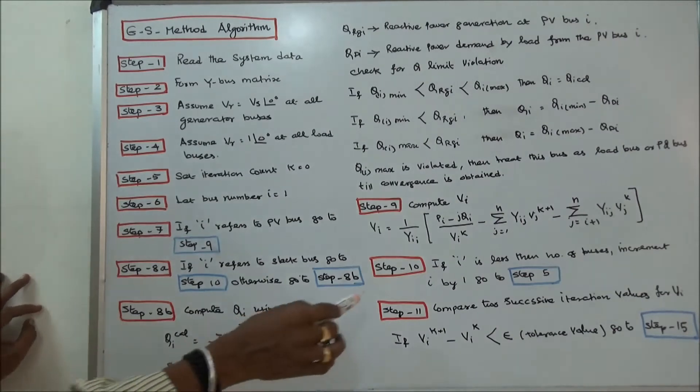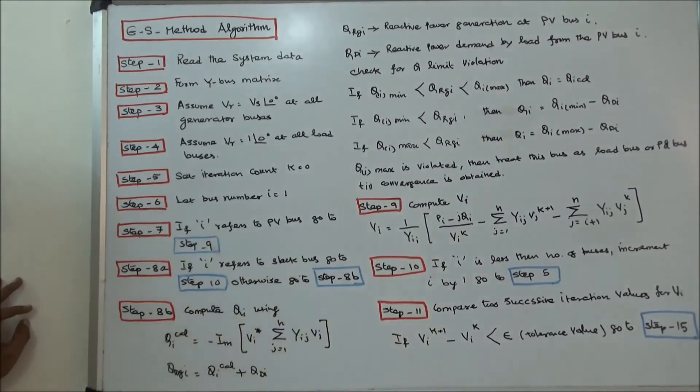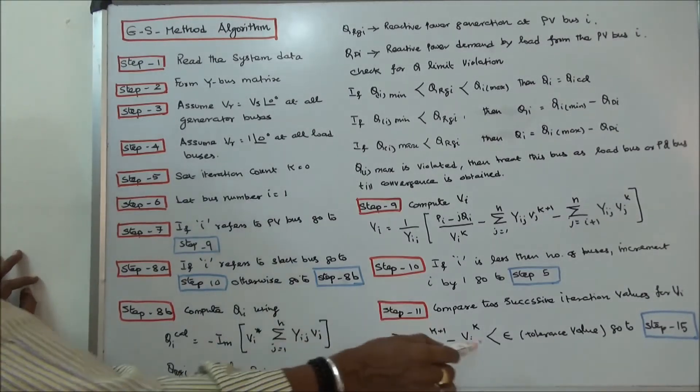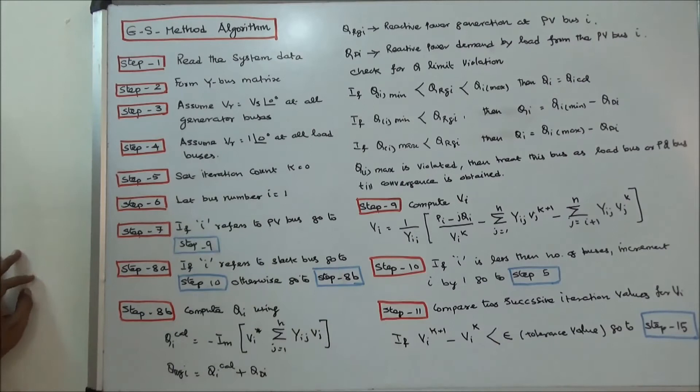Step 11: Compare the two successive iteration values of VI. If VI(K+1) minus VI(K) is less than excellent tolerance value, go to step 15.